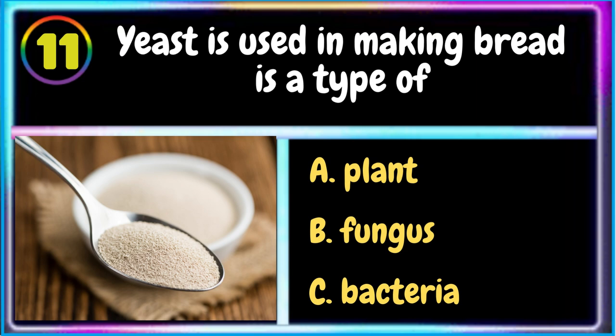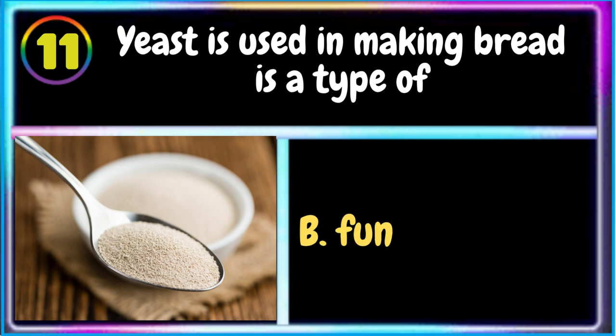11. Yeast is used in making bread as a type of: A. Plant B. Fungus C. Bacteria. The correct answer is B. Fungus.